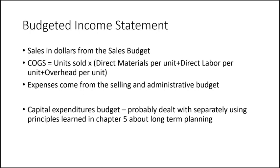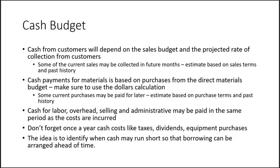The selling and administrative expenses come directly from the selling and administrative budget. You may also have items from your capital expenditures budget, though that's often entirely separate and may not impact the budgeted income statement. Once we have the income statement, we have our projected operating income — sometimes called pro forma, meaning forward-looking. Then we move on to the cash budget.